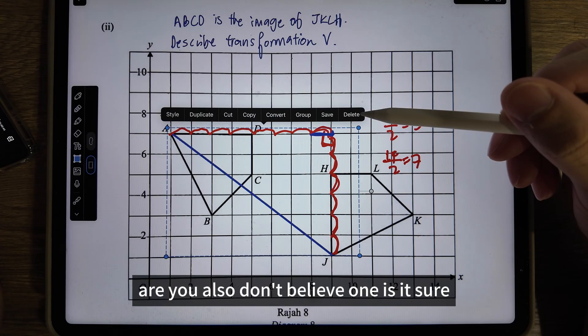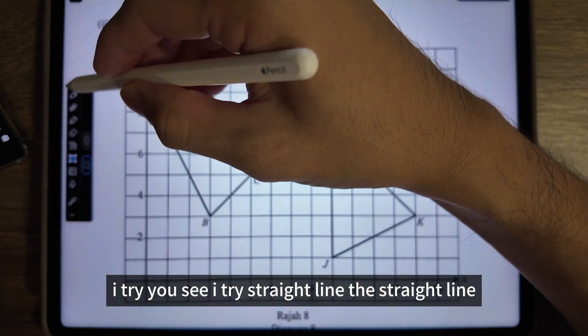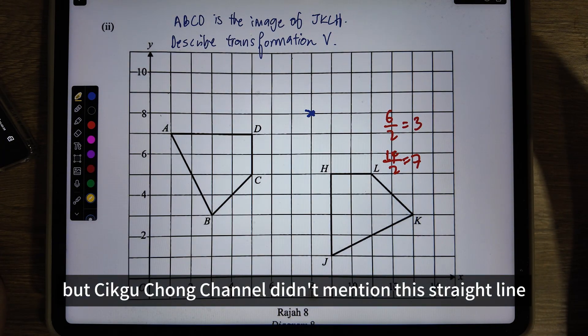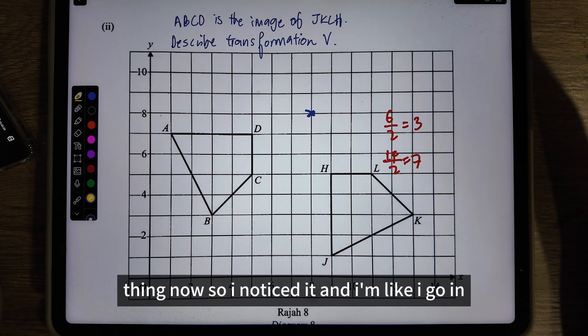Never mind. Then I said, 'I don't believe it.' Same like you all - you also don't believe, right? Sure! 'No teacher, you try straight line!' Okay, I try. You see, I try straight line because with straight line you cannot form right angle triangles, right?